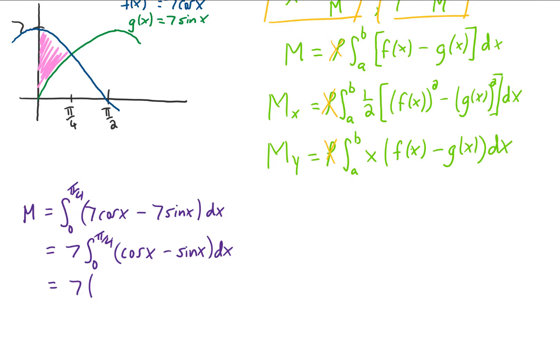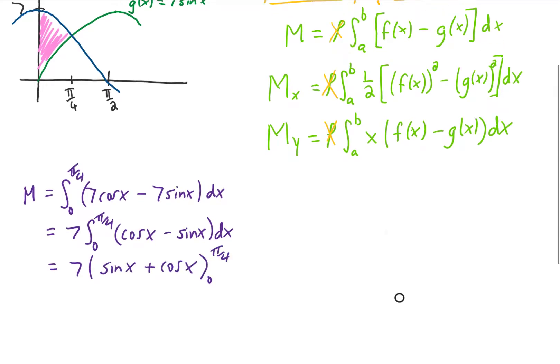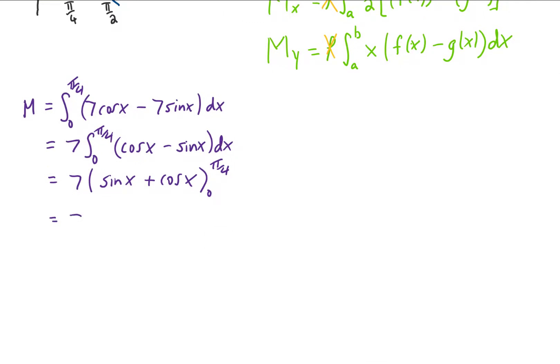The integral of cosine is positive sine. The integral of sine is negative cosine. We can then plug our upper and lower limits of integration into this result, and using our knowledge of the unit circle, and maybe just one little step of simplification, we have two like terms here, and they can be combined just like that.